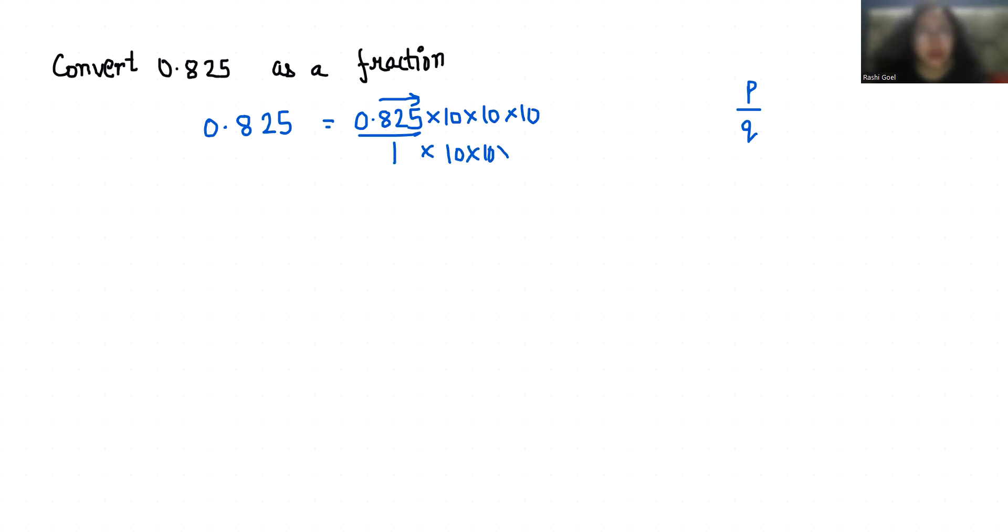This is fraction form. Now we are going to reduce it and write it in simplest fraction form. 825 and 1000 are both divisible by 5. Dividing 825 by 5 gives 165, and 1000 divided by 5 is 200.